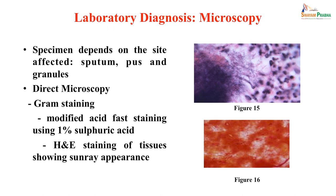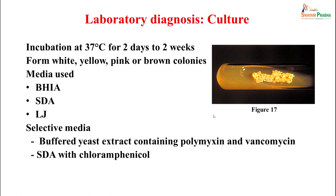In mycetoma cases, taking the pus sample, sputum, or granules and looking under the microscope by direct microscopy, Gram staining, or acid-fast staining allows visualization of the organisms surrounded by granulation tissue and infiltration, including acid-fast structures. They can be grown in culture at 37 degrees centigrade from 2 days to 2 weeks, forming white, yellow, pink, or brown colonies. Media on which they can be grown include brain heart infusion agar, Sabouraud dextrose agar, or Löwenstein-Jensen medium. Selective media include buffered yeast extract containing polymyxin and vancomycin, and SDA with chloramphenicol.